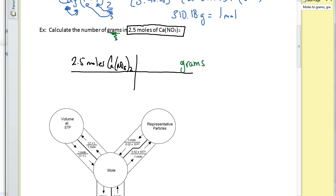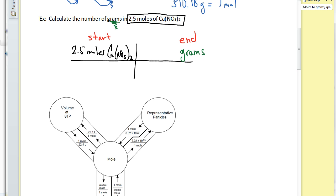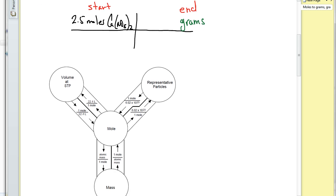Now, the nice thing about using the mole road is it's going to tell me where I want to start and where I want to end just like any map would. And so the starting point on the mole road will be my known. And my ending point on the mole road will be my unknown.